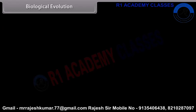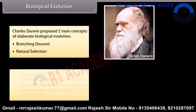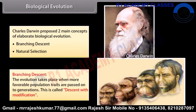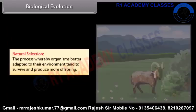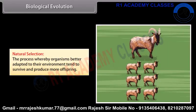Biological evolution: Charles Darwin proposed two main concepts of biological evolution. First, branching descent — the evolution takes place when more favorable population traits are passed on to generations, called descent with modification. Second, natural selection — the process whereby organisms better adapted to their environment tend to survive and produce more offspring.